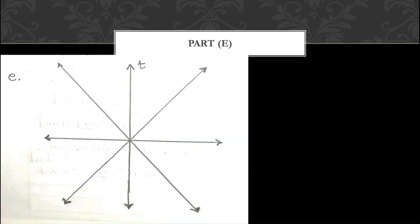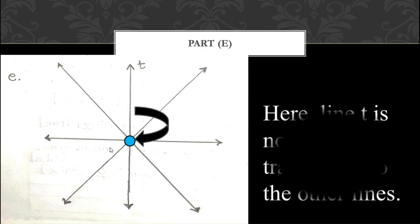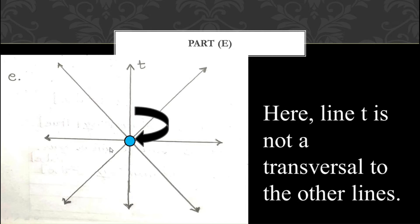Now let us move on to part E. Here in part E, the transversal T is intersecting at only one point. Since it is cutting at only one point, line T is not a transversal to the other lines.